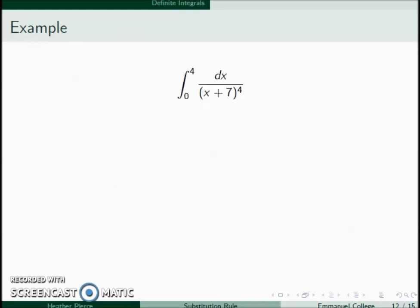So for example in this one we'll let u be equal to x plus 7. This gives me du is equal to dx. So this becomes the integral of du over u to the fourth. As far as my bounds go, when x is equal to 0, u is equal to 7, and when x is equal to 4, u is equal to 11.